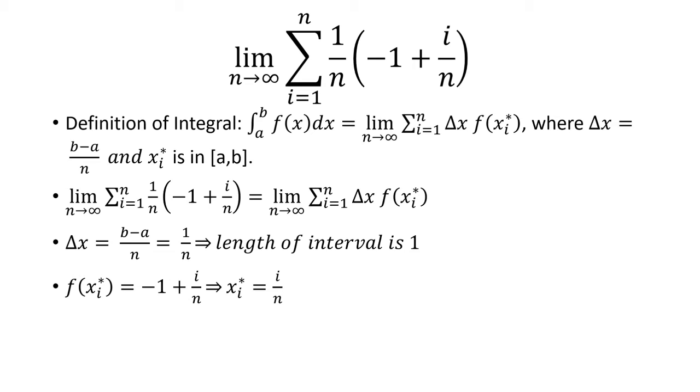And so f(xi*) will just be whatever is inside the parentheses: -1 + i/n. And here xi* is going to be i/n. So f(xi*) being -1 + xi* means that f(x) is -1 + x.